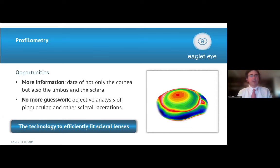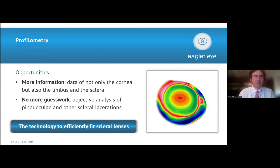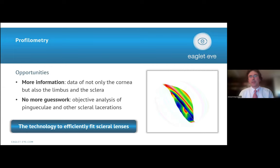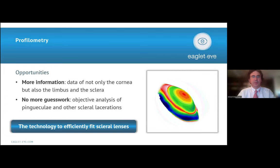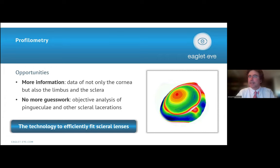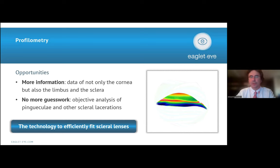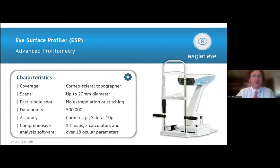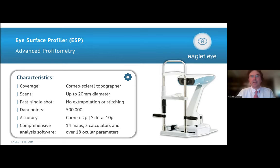The iSurface Profiler is based on profilometry. It measures the full cornea limbus to limbus every time, plus a large part of the sclera. With that 3D data of the ocular surface, you take away the guesswork of specialty contact lens fitting. It's a single-shot device — very fast — with 2-micron accuracy for the cornea and 10-micron for the sclera, and about half a million data points. It's also a full topographer with all the corneal maps and parameters of a normal topographer.